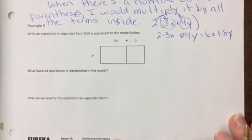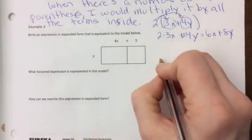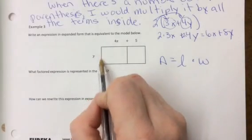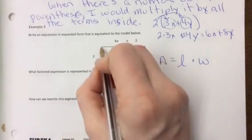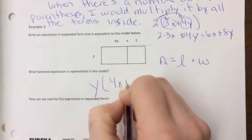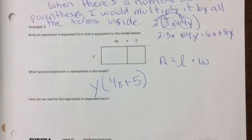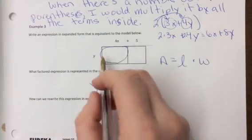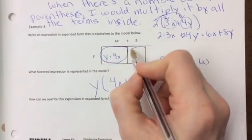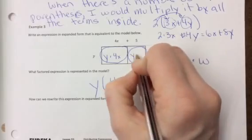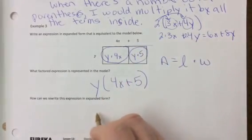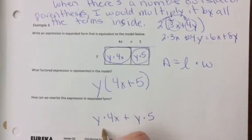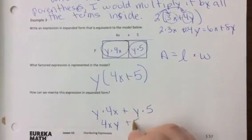Now we have my favorite approach, which is the area model. What factored expression is represented in this model? To find the area, do you guys remember how to find the area of a rectangle? It's always length times width. So when you look at this, we have a length of Y times, what's your width going to be? So 4X plus 5. So this is just another approach to how you can see distributive property. So one way we could find the area of this by using the expanded form is find the area of this rectangle. Your expression would be Y times 4X. How would you find the area of this rectangle? It would be Y times 5. To find the total area, you would add these together. So your expanded form expression would be the two areas added together. Y times 4X plus Y times 5, which is equal to 4XY plus 5Y.